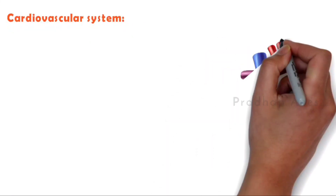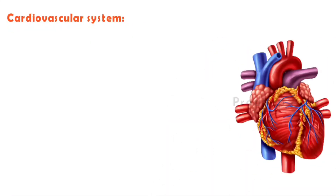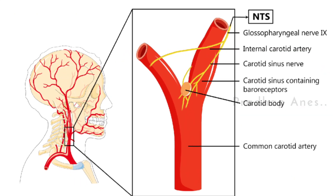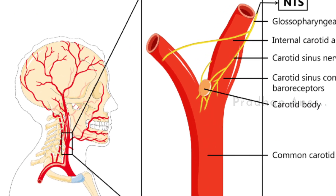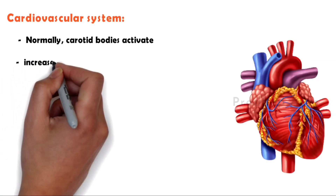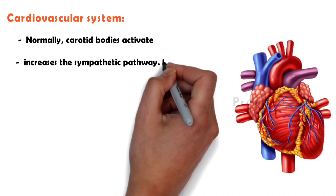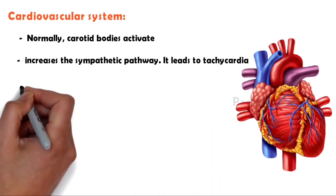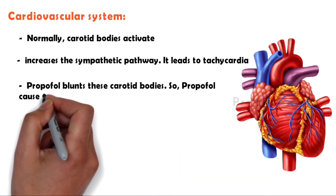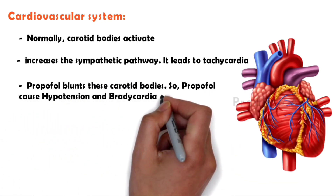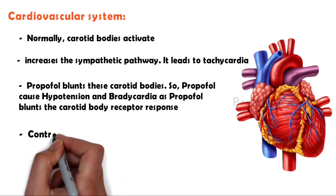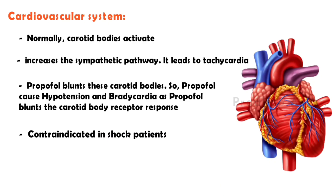Cardiovascular system: Normally, carotid bodies activate — these are sensory organs that detect the chemical composition of arterial blood. They increase the sympathetic pathway, leading to tachycardia. However, propofol blunts these carotid bodies, causing hypotension and bradycardia by blunting the carotid body receptor response. Therefore, propofol is contraindicated in shock patients.